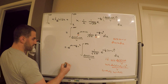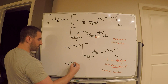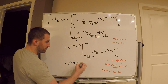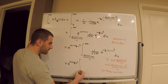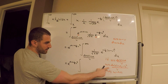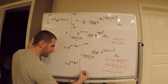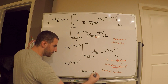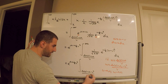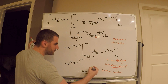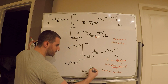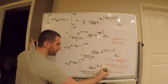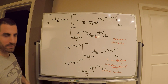This is equal to e to the mu plus 1 half v squared, times the integral from ln k minus mu minus v squared, all over v, to infinity, of 1 over square root 2 pi times e to the negative 1 half w squared, dw.